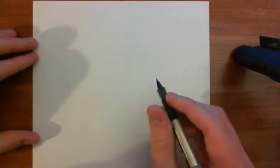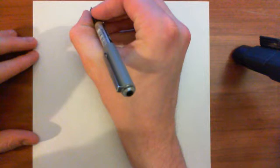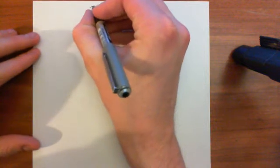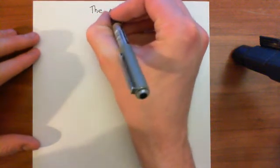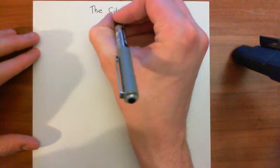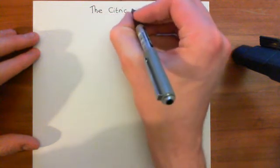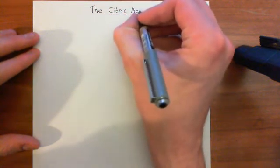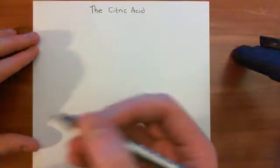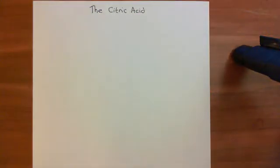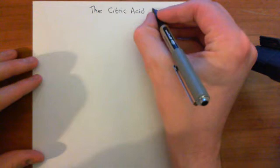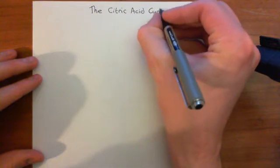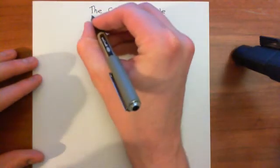Welcome to this next video in the playlist on metabolism. In this video, we're going to follow up on our discussion of glycolysis and discuss the citric acid cycle. We will be starting with pyruvate, so we're not going to re-cover glycolysis. We're going to start with the end product of glycolysis and see where it goes after that.